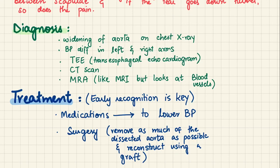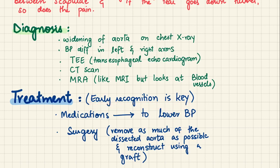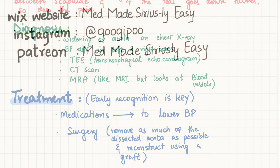Regarding treatment, early recognition is key. Medications can be given to lower blood pressure. Surgical treatment involves removing as much of the dissected aorta as possible and reconstructing it using a graft. That covers aortic dissection.